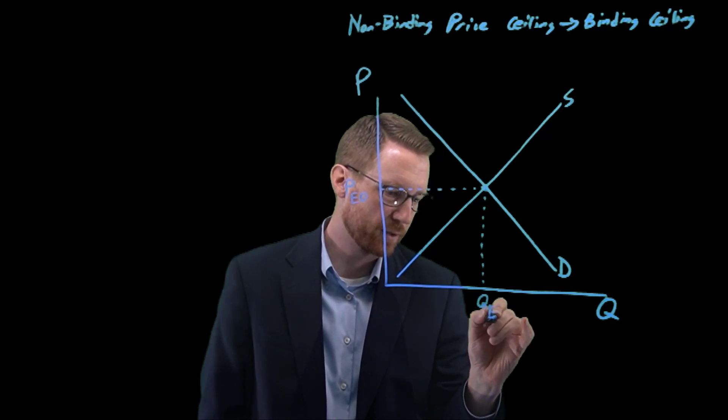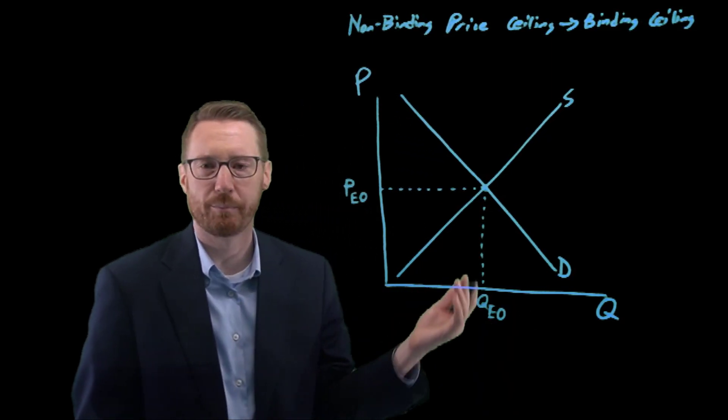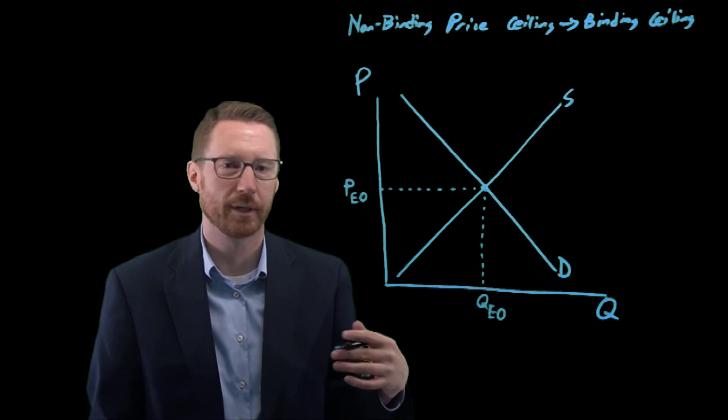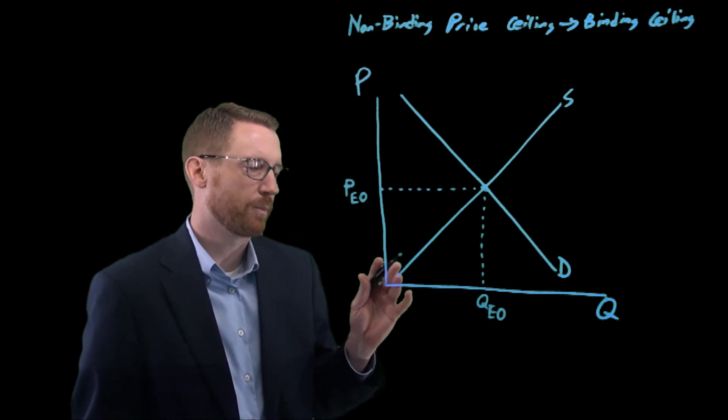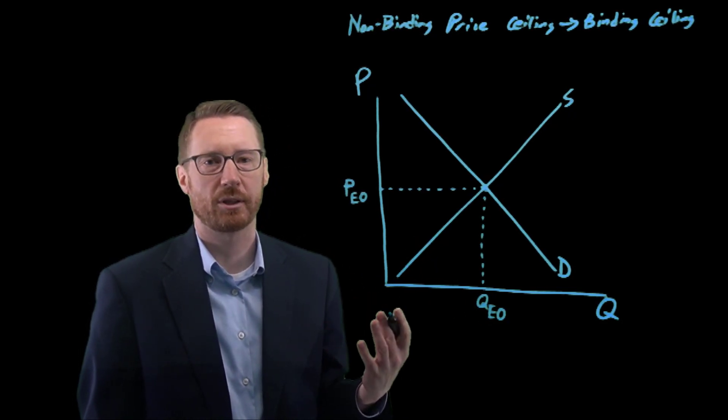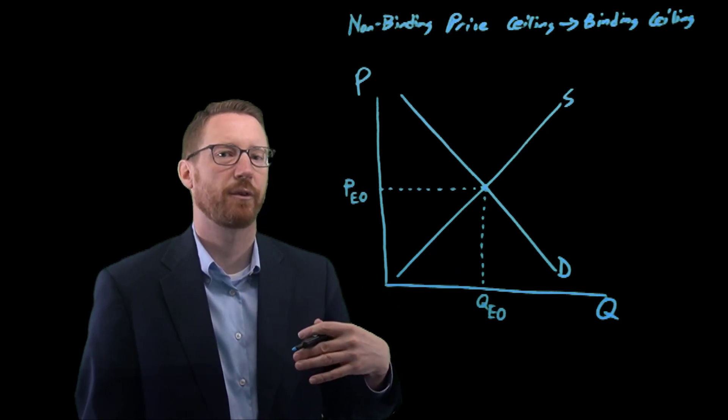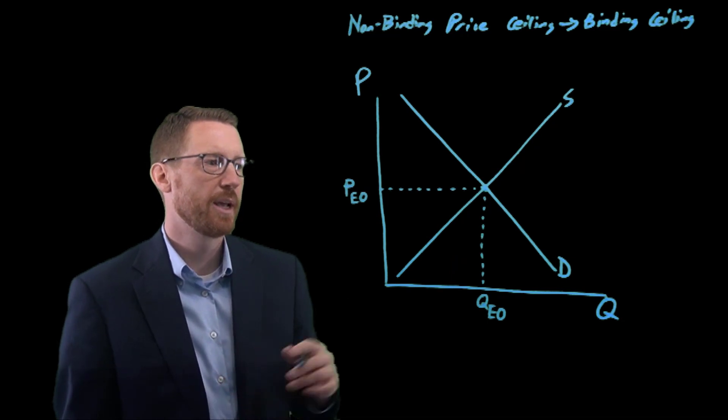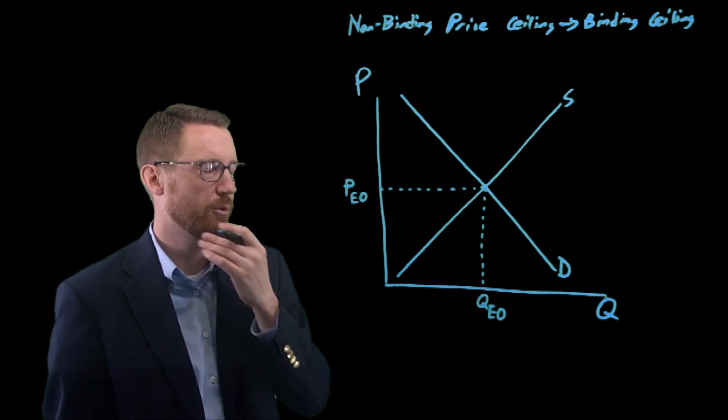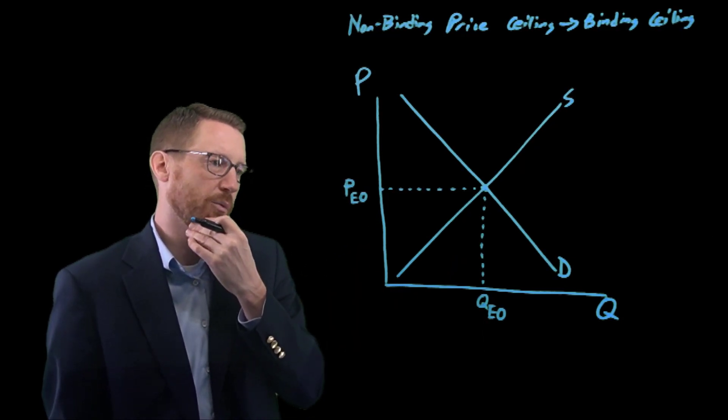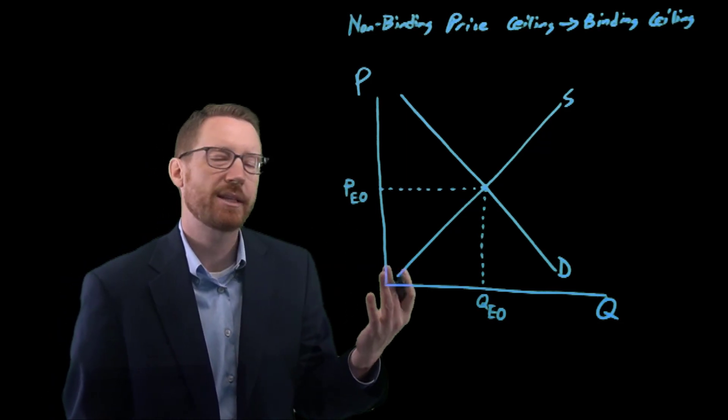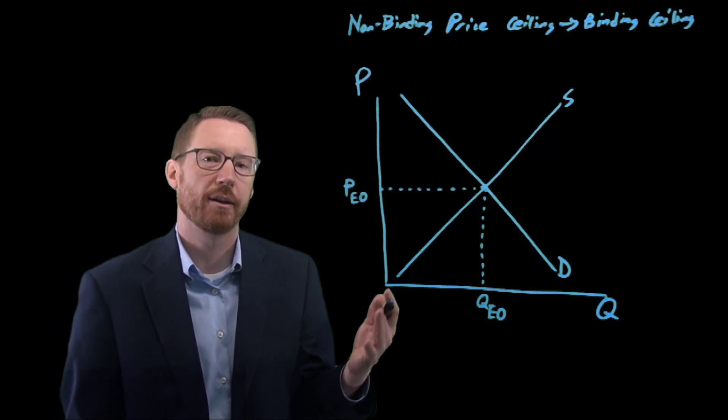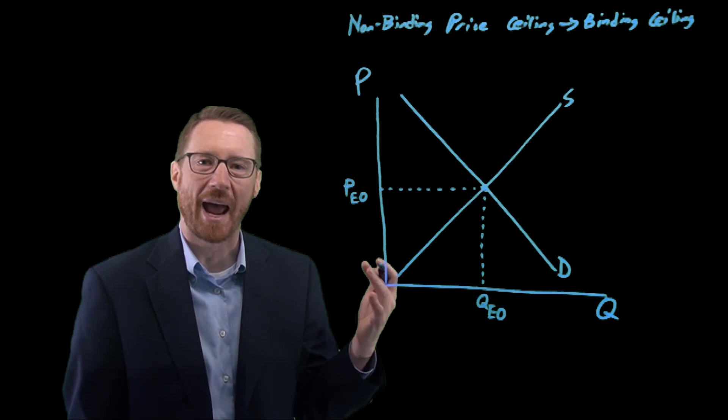We'll call that PE zero, our equilibrium price initially, and we'll throw in an initial equilibrium quantity, QE zero. We've got a market that's cruising along, it's in equilibrium, things are doing really well.